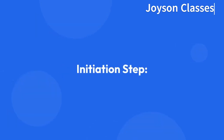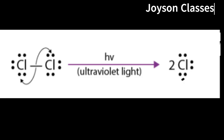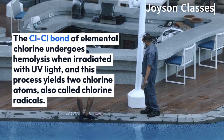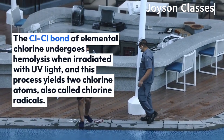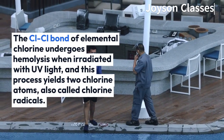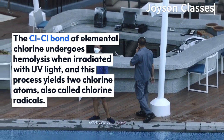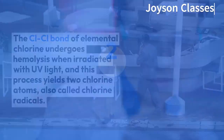Initiation step: The Cl-Cl bond of elemental chlorine undergoes homolysis when irradiated with UV light, and this process yields two chlorine atoms, also called chlorine radicals.